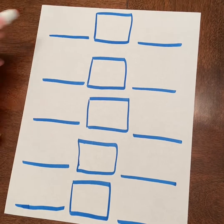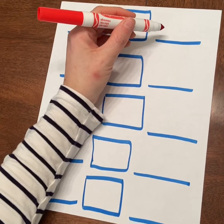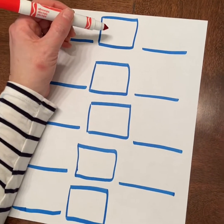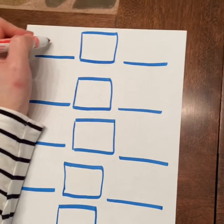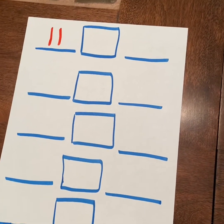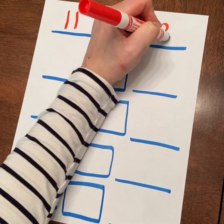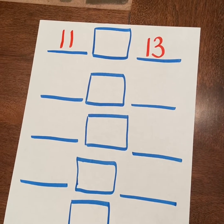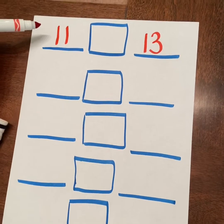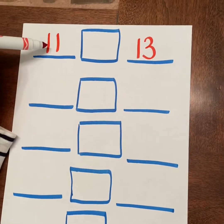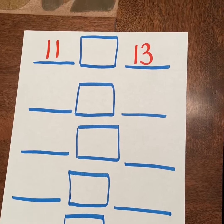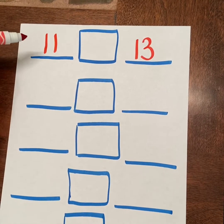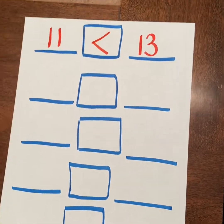I am going to write two numbers, one number on each line. We're going to talk about which way the alligator's mouth is facing for greater than or less than. On the first number line write 11, and on the next line write 13. Which number is greater — is 11 or 13 greater? 13 is greater than 11, so we're going to draw the alligator's mouth facing the 13.